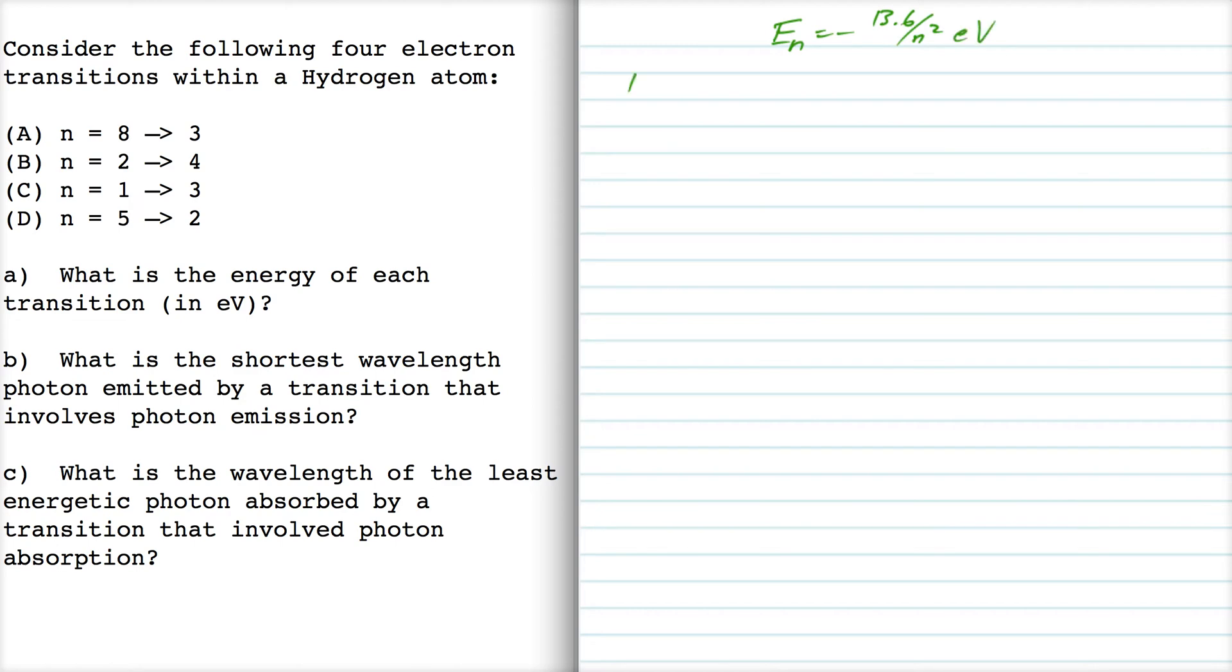So, the energy for level 8, which is the highest level I see, is negative 0.213 eV. The energy for level 5 is minus 0.544 eV. I'm going to do this for all the different levels. I see 8, 5, 4, 3, 2, 1 as the different levels that are covered here.